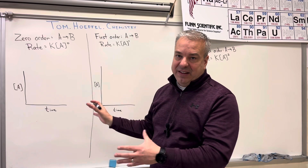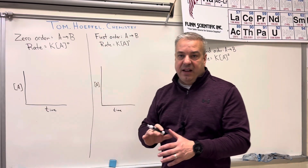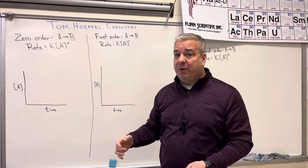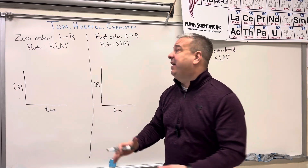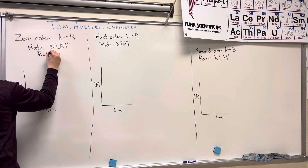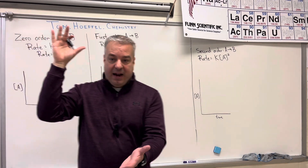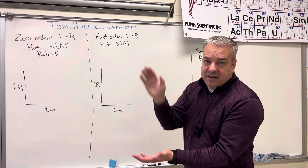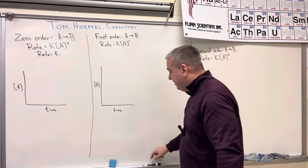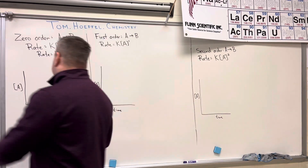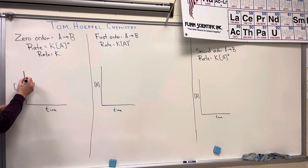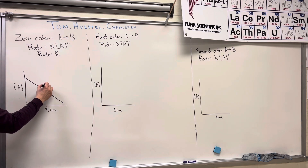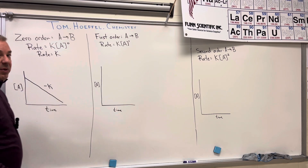For zero order kinetics, it's kind of the easiest of the three. The rate doesn't depend on the concentration because the concentration is going to the zero power, and anything to the zero power is just one. So really, the rate is just equal to whatever the rate constant k is. This chemical reaction will just react at a constant rate, so it's a straight line. The rate of the reaction is equal to the slope of the line, which is going to equal negative k.